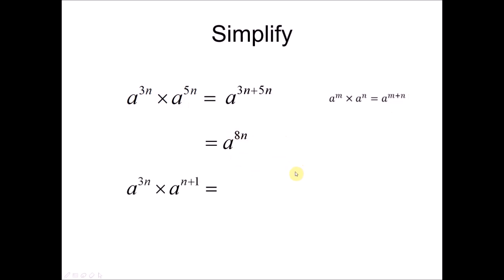Looking at the next one: since they have the same base number, n plus 1 is added to 3n. So you simplify this and get A to the power of 4n plus 1.